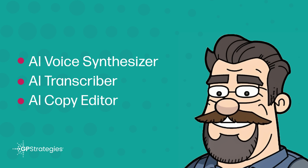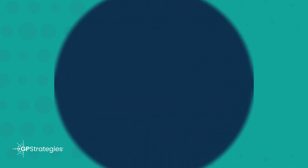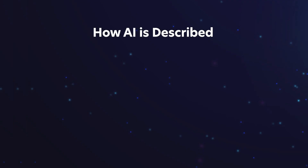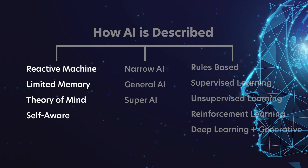With that out of the way, let's get started. In this presentation, we'll explore three different ways AI is described, drawing from various sources for comparative information. Each vertical column in the model represents a different approach to describing AI.